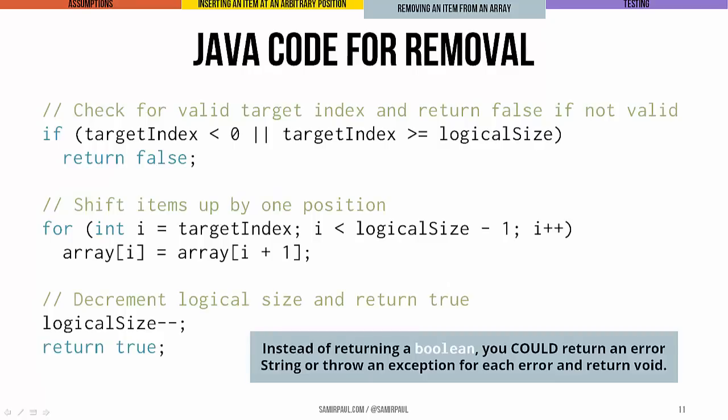The code for removal looks pretty similar as well. We're checking to make sure that the target index is valid. We're doing our shifting, and ultimately we're adjusting our logical size and returning a Boolean value to indicate that the whole thing worked. Now, there's other ways to handle errors. Instead of returning a Boolean value, you could return a string that told what kind of error happened, or you could throw an actual exception object. And if you did that, then you'd want to return void rather than Boolean. That's up to your judgment.